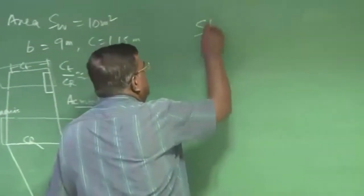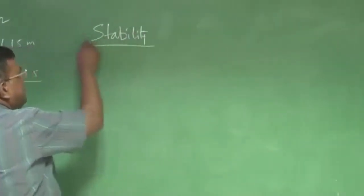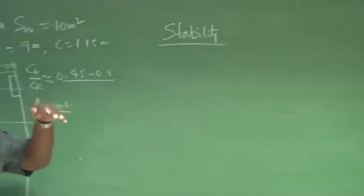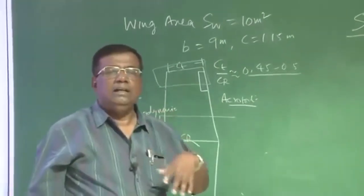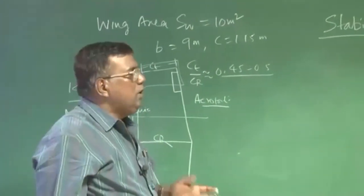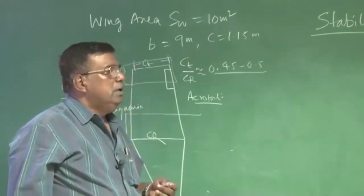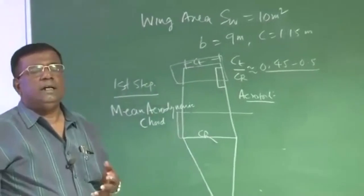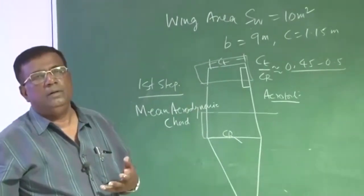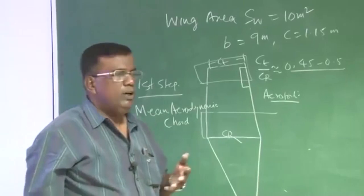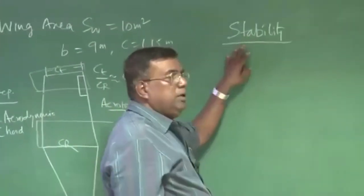I am sure you can guess what I am going to talk about now. We are talking about stability. Because whatever missions — takeoff, cruise, climb, descent, loiter — there is an inherent assumption that the aircraft is statically and dynamically stable, for a general low-speed aircraft. So I must talk about stability.